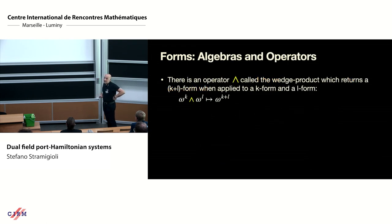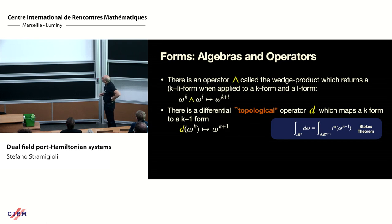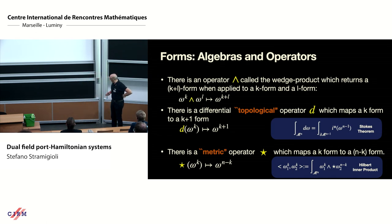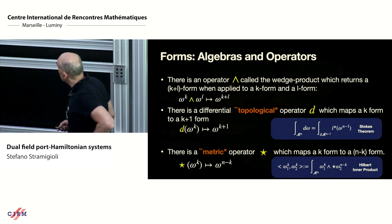Forms are basically things you can pair with manifolds: a one-form pairs with a one-dimensional submanifold and returns a real number. It's really an intrinsic pairing. One-forms integrate on lines, two-forms integrate on surfaces, three-forms integrate on volumes. There is the wedge operation: a k-form and an l-form give a k+l form. You have the topological operator d, from which Stokes' theorem comes, which increases the degree by one. And then you have the Hodge star, the metric operator, which gives the inner product structure.